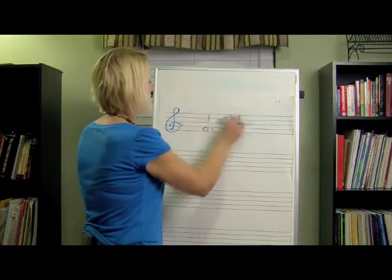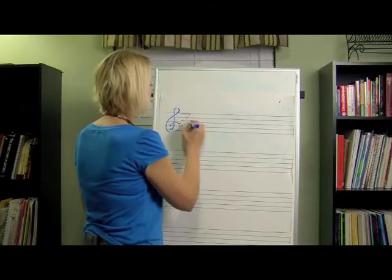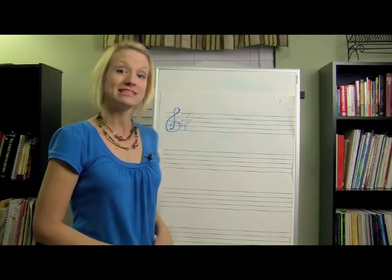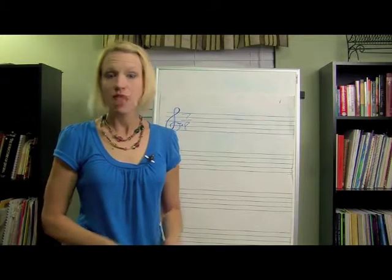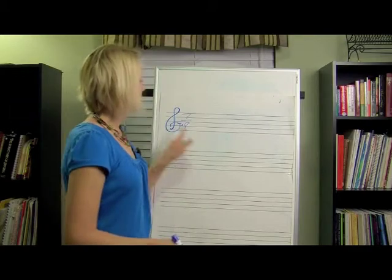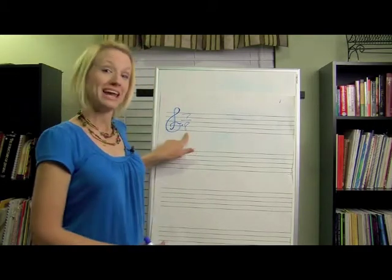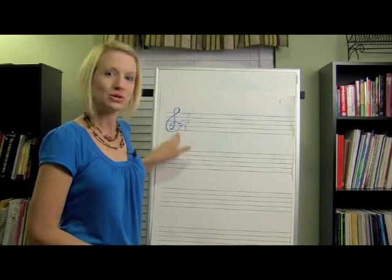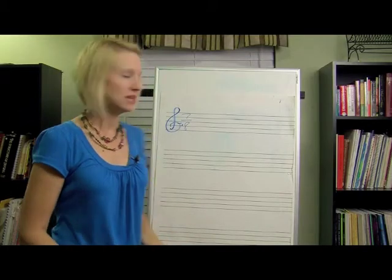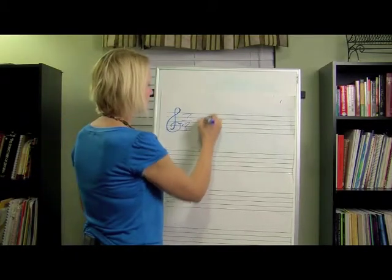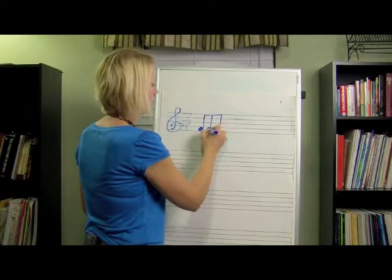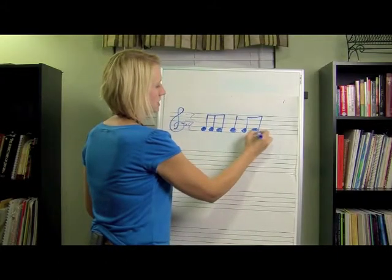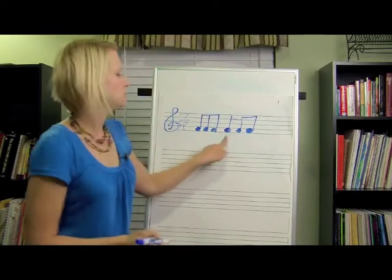Another example might be 7/8. Remember, we used 8 on the bottom a lot when we talked about compound meter, but the difference is that there's a 7 on the top. Since 7 is a prime number that's not 3, you automatically know that's asymmetrical meter. If there's an 8 on the bottom, that means we would have 7 eighth notes, because the eighth note gets the beat. So you count to 7 with eighth notes as the beat — for example, a quarter note there would equal 2 beats: 1, 2, 3, 4, 5, 6, 7.